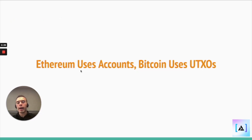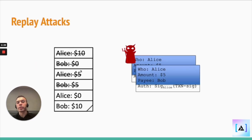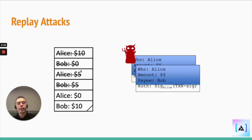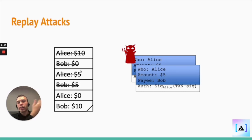So what Ethereum uses to protect against replay attacks is actually a nonce. The Ethereum account state includes a nonce, so every time you send an authorized transaction to the network, a nonce value is included with it.